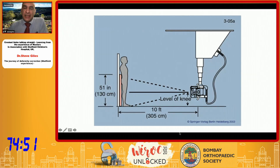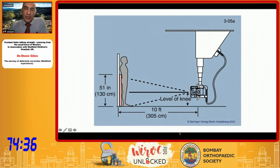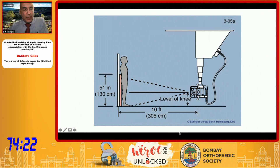Key to this is getting good quality imaging so that you can make assessments. The standard that's been used for a long time is the standing AP x-ray from about 10 feet. I did the Baltimore limb lengthening and limb deformity course back in 2004, and I've found those images useful as a resource for consistency.